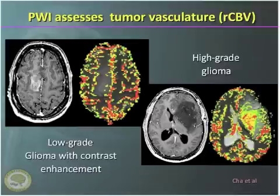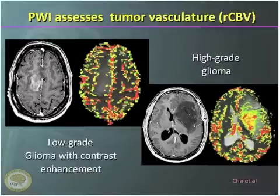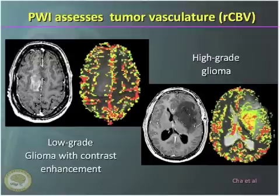Perfusion imaging looks at blood flow and blood volume. On the left side you see an enhancing lesion you might think is anaplastic, but the perfusion is essentially very low, indicating this is still a low-grade tumor — most likely an oligodendroglioma, because we know we can see enhancement with low-grade oligos. On the other hand, we see a fairly diffuse infiltrative lesion in the left insula with no contrast enhancement, but the blood flow is relatively elevated. When we biopsied or resected that lesion, we found high-grade components. Try to stay away from just using MRI scans; use targeted biopsy with physiologic imaging.